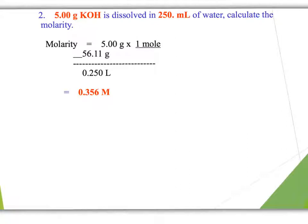Here we have a problem: 5 grams of potassium hydroxide dissolved in 250 milliliters of water. What is the molarity? We must first convert from grams to moles: 5 grams of KOH times 1 mole over the weight of KOH from the periodic table. We then take our 250 milliliters and convert to liters. Dividing moles by liters, we have an answer of 0.356 molarity.